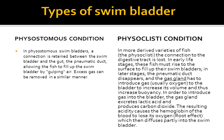Depending on the presence of the ductus pneumaticus — the duct between the swim bladder and the esophagus — the swim bladder in fishes is divided into two broad categories: physostomous and physoclistous. In physostomous or soft-rayed fishes, there is a connection between the swim bladder and the gut via the pneumatic duct or ductus pneumaticus, allowing the fish to fill up the swim bladder by gulping air; excess gas can be removed in a similar manner.